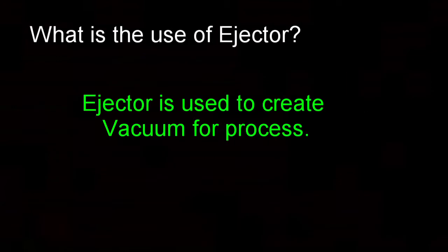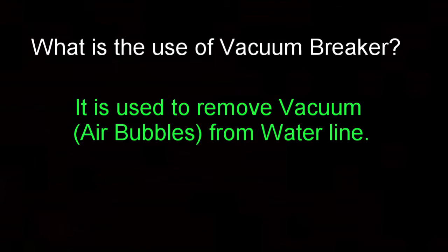What is the use of an ejector? An ejector is used to create vacuum for process applications. What is the use of a vacuum breaker? It is used to remove vacuum and air bubbles from a water line.